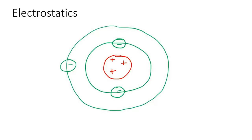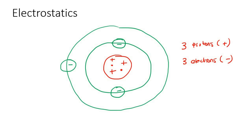Here once again, we have three protons, which are positive, and three electrons, which are negative. So the overall charge here would be zero, because three positives and three negatives give you zero.